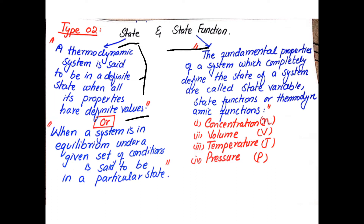For example, under normal conditions we have a liquid state, but if the temperature is lowered we get a solid state. When a system is in equilibrium under a given set of conditions — specific temperature, pressure, volume, etc. — it is said to be in a particular state.